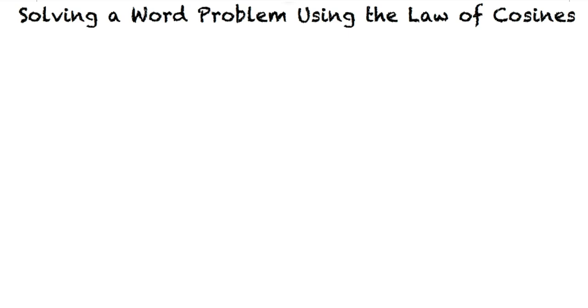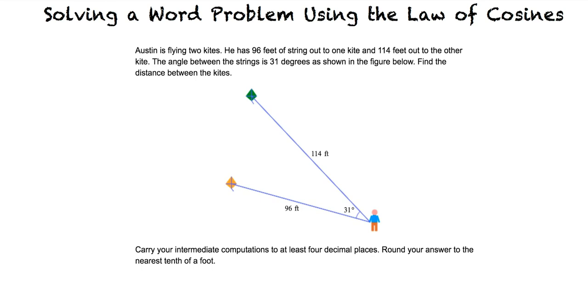Let's take a look at an example problem to get a better understanding of this topic. Austin is flying two kites. He has 96 feet of string out to one kite and 114 feet out to the other kite. The angle between the strings is 31 degrees, as shown in the figure below. Find the distance between the kites.